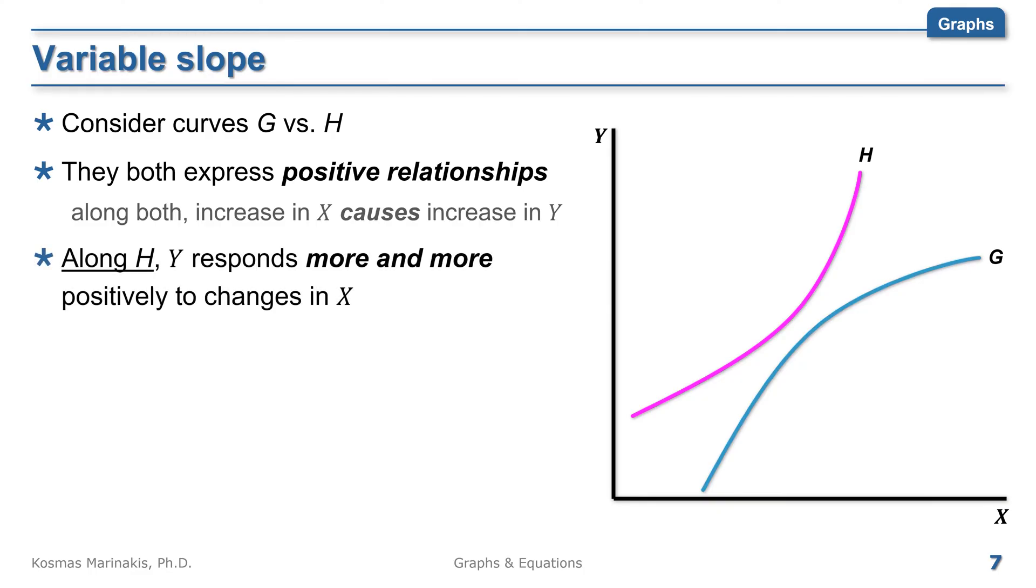However, along curve H, it seems that y becomes progressively more responsive to x. This is because the slope of curve H is not only positive, it is also increasing along the curve. Observe, for instance, the slope at point K and compare it to the slope at point L. As we increase x, curve H becomes steeper and steeper.